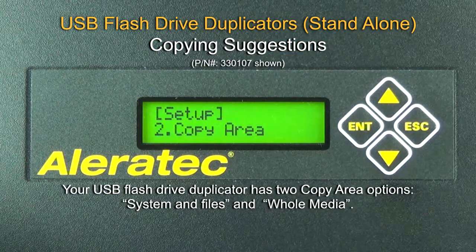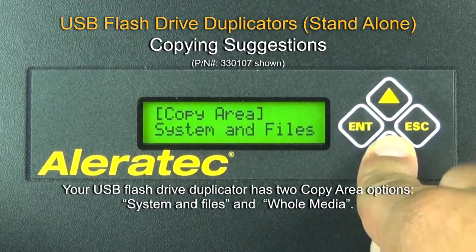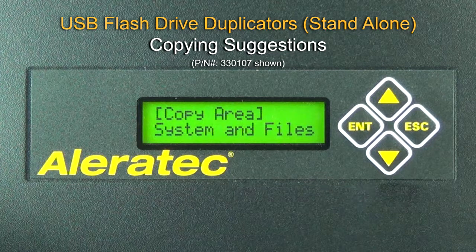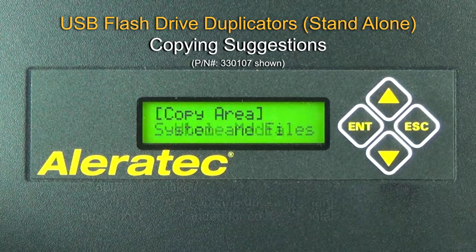In this part of the series, I will provide you with suggestions and troubleshooting tips to help you get the most out of your USB flash drive duplicator. Your USB flash drive duplicator has two copy area options: System and Files, and Whole Media. The System and Files option will copy only the data area of the source USB flash drive and not copy the empty space. This option makes faster copies and is useful when you would like to just copy the data to the target drives, but is not recommended for copying bootable drives.